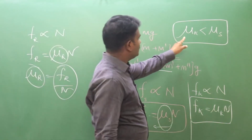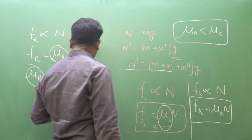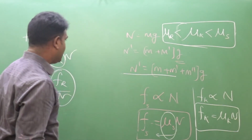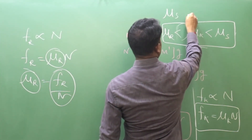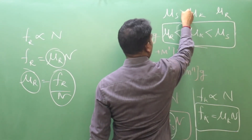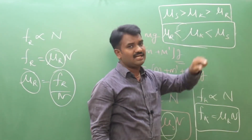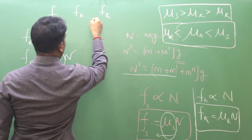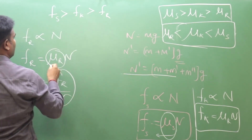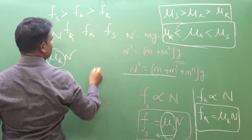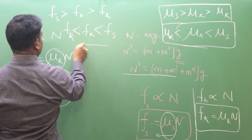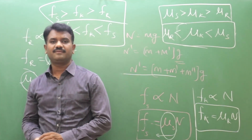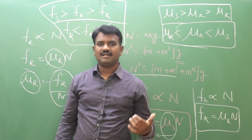When comparing the three coefficients, mu-r is the least, meaning rolling friction produces the minimum friction. So mu-s is greater than mu-k, which is greater than mu-r. Similarly for the friction forces: fs is greater than fk, which is greater than fr, or equivalently fr is less than fk, which is less than fs. This concludes the laws of friction, and in the next lecture we will discuss the motion of an object on a rough horizontal surface.